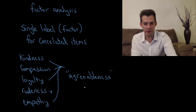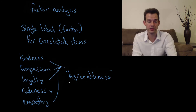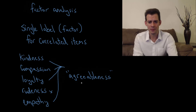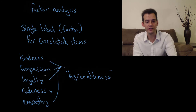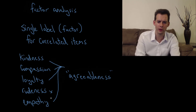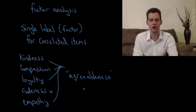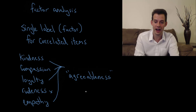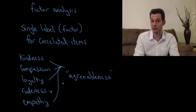People will disagree about exactly what the label should be because certain terms may have connotations they don't agree with, but the idea is we come up with a single label. We say agreeableness is going to refer to all of these other things — kindness, compassion, loyalty, empathy — because we found correlations between all these things for lots of people who take these assessments. If somebody is high in agreeableness it means they're high in all of these things. That's how we use factor analysis to look at personality.